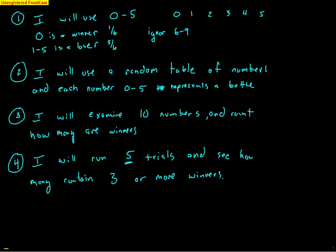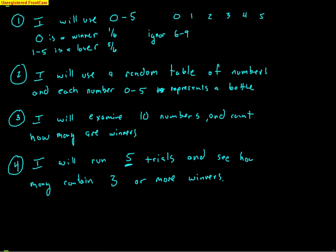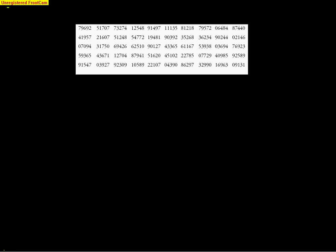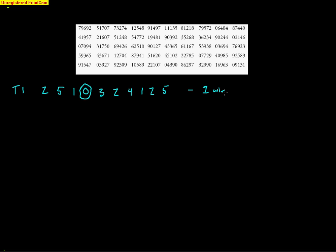Let's actually run this with real random numbers. Trial 1 — I need 10 numbers. I'm ignoring 6, 7, 8, and 9, so as I go through: I skip 7, 9, 6, 9. Then 2 works, 5 works, 1 works, skip 7, 0 works, skip 7, 3 works, 2 works, skip 7, 4 works, 1 works, 2 works — that's 9 numbers — and 5 works for the 10th. So now I have my 10 numbers. The only winner is 0, so I have one winner.